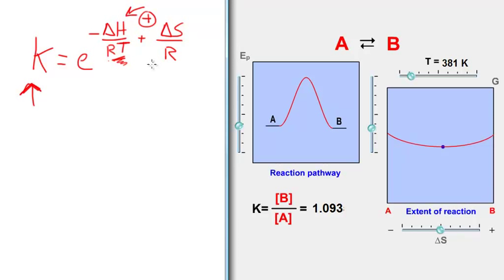For exothermic processes it's the opposite. If we make delta H a minus, these two minuses will cancel, and therefore increasing T will actually increase the weight of the denominator, decreasing this number and causing K to go down. So for exothermic processes, increasing T in general will cause the equilibrium constant to decrease. The reaction will become more reactant favored at higher T for exothermic processes.